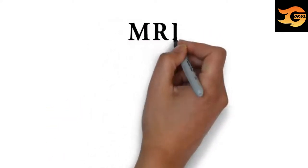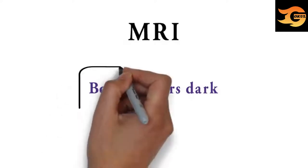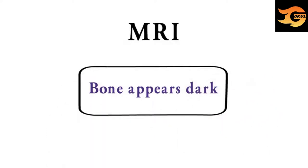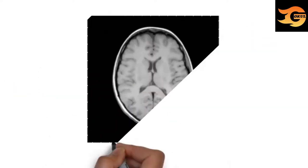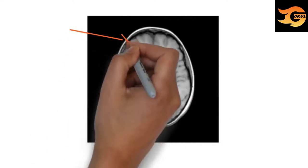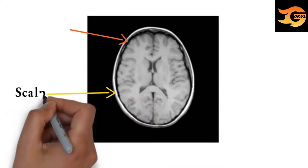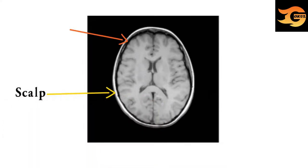Now we will see MRI. In MRI, bone appears dark, and that's the main differentiating point from CT scan. In this picture you can identify it as MRI because skull bone is appearing dark. Don't confuse it with the thin layer of outer scalp fat, which is appearing white.